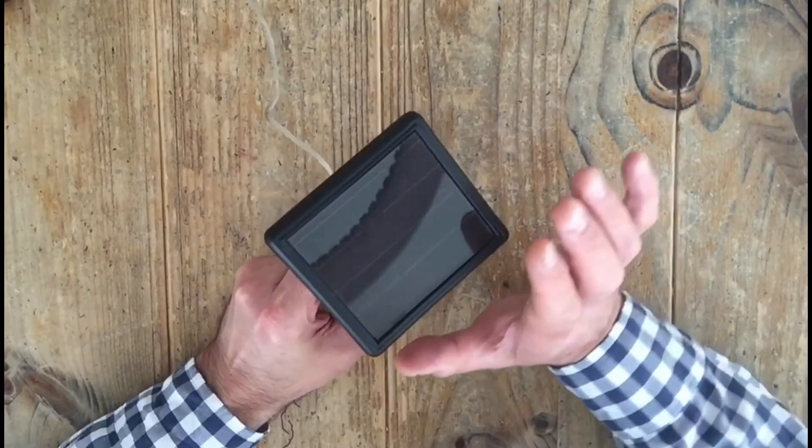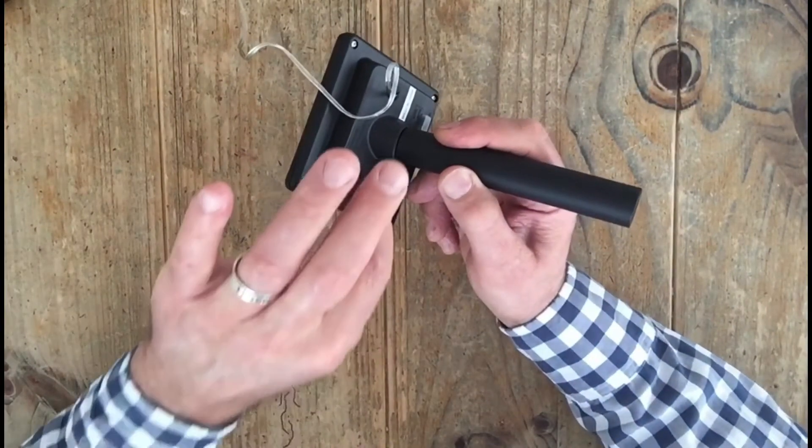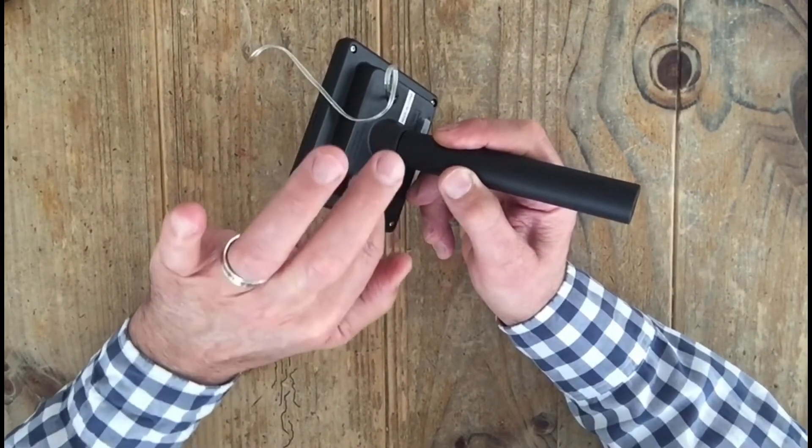This is the solar panel. This is what takes in the sun and charges the AA rechargeable battery under this case.